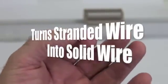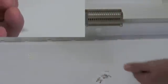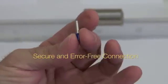Installing a wire ferrule on the end of the stranded wire essentially turns the stranded wire into solid wire. This helps ensure secure and error-free connections.